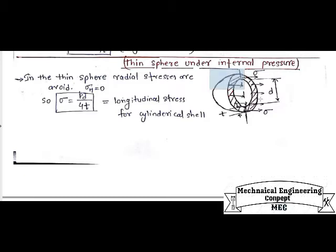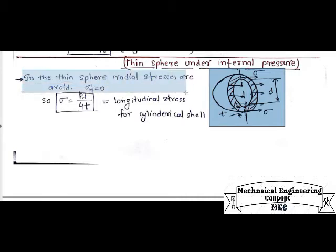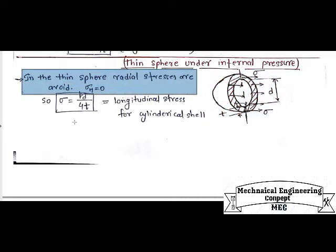This is the cross section area of the sphere, in which t is the thickness of the sphere and d is the internal diameter of the sphere. Basic assumption in a thin sphere: radial stresses are always neglected or taken as zero. That means the radial stress sigma_r will be zero.